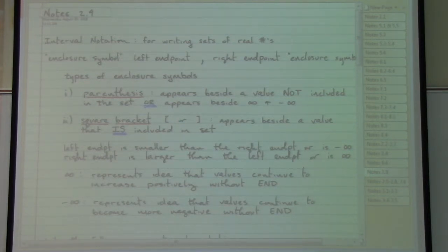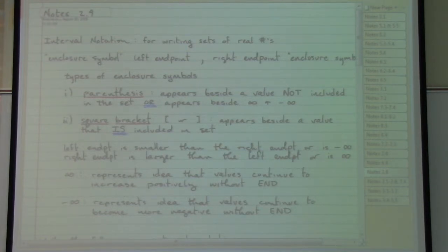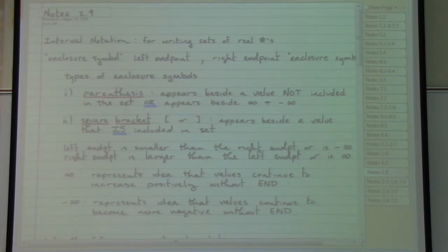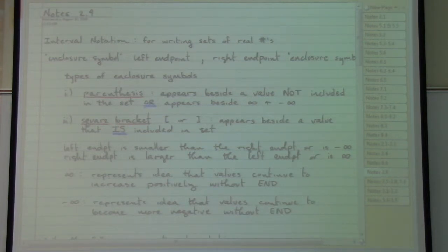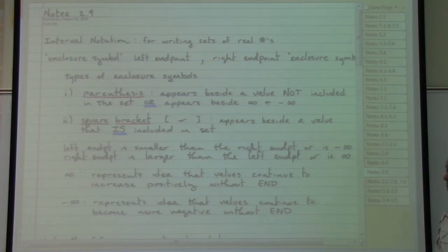We need to handle a couple of different types of situations with these rules. We have two different kinds of symbols used to either begin or end our answer: a parenthesis or a square bracket. A parenthesis is going to appear beside a number that is not part of our answer, and would also be used beside an infinity symbol or a negative infinity symbol. The square bracket only shows up when a number is included as part of the answer, and will never appear beside an infinity symbol.